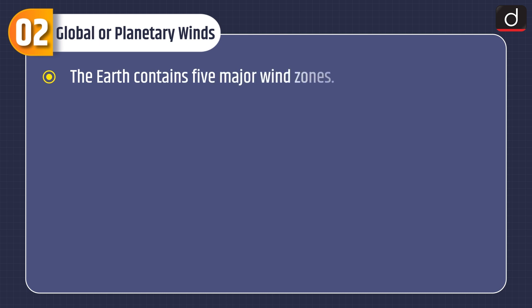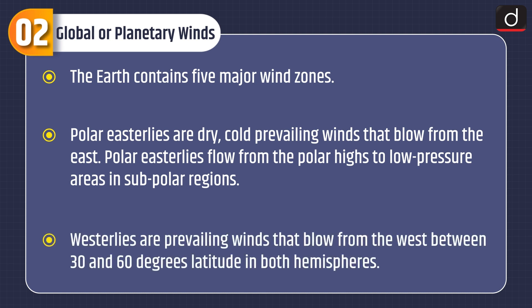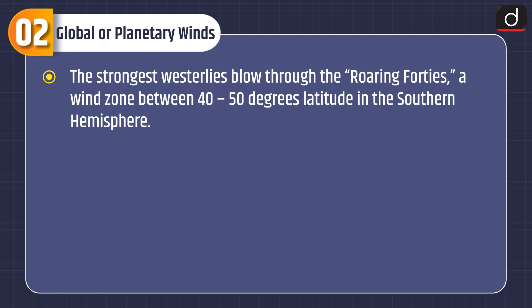Now let's discuss about global or planetary winds. The earth contains five major wind zones. Polar easterlies are dry, cold prevailing winds that blow from the east. Polar easterlies flow from the polar highs to low pressure areas in subpolar regions. Westerlies are prevailing winds that blow from the west between 30 and 60 degrees latitude in both hemispheres. The strongest westerlies blow through the roaring forties, a wind zone between 40 to 50 degrees latitude in the southern hemisphere.